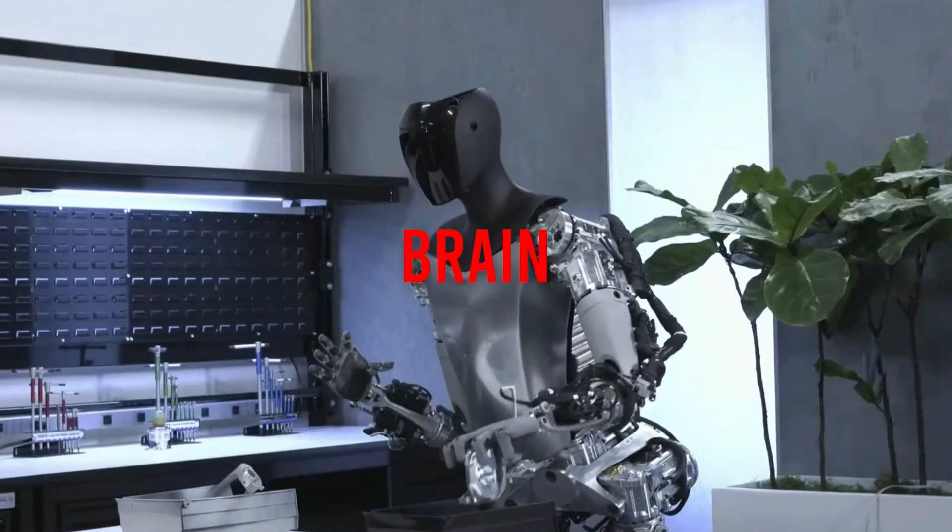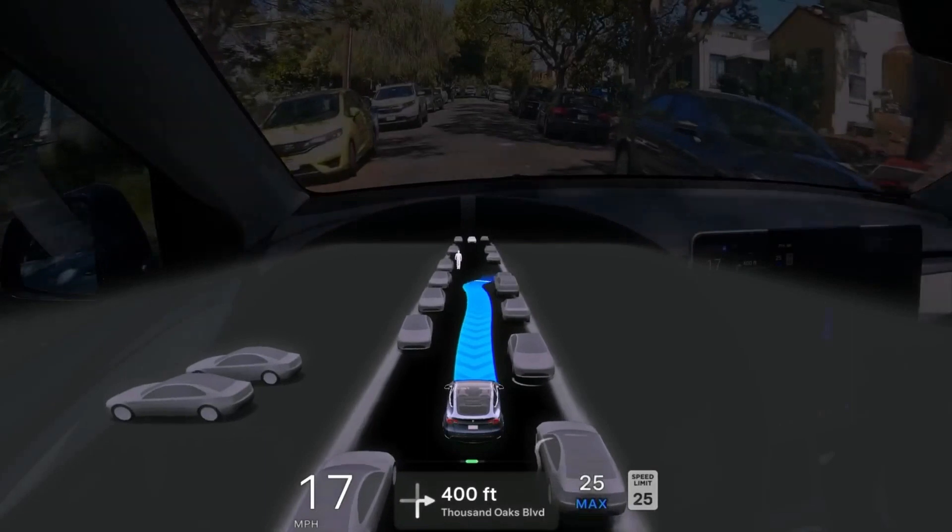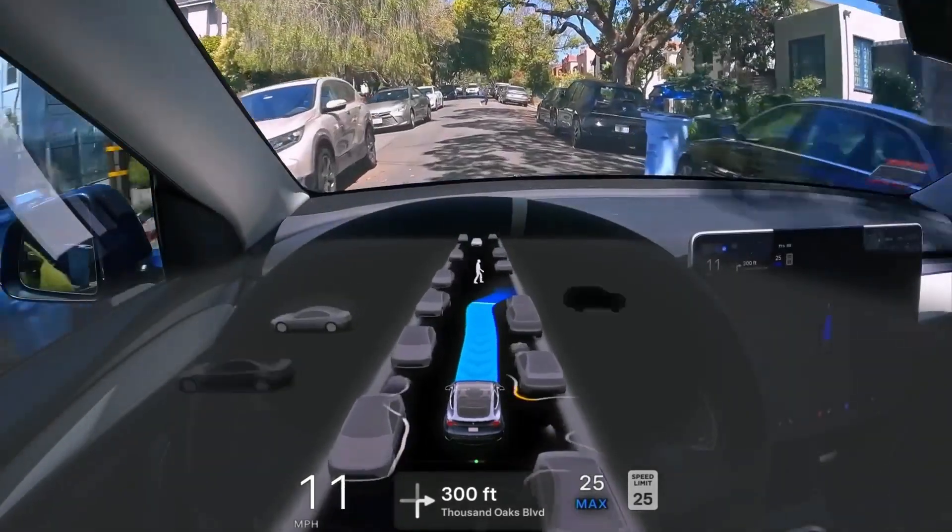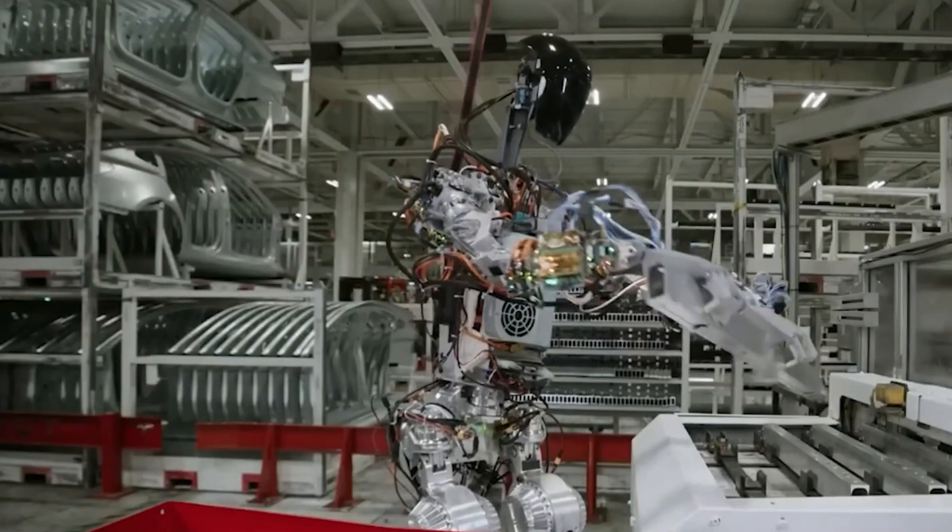Brain: Optimus is controlled by the same AI system that Tesla is developing for the advanced driver assistance systems using in cars. The AI system uses neural networks to process data from cameras and sensors and make decisions based on the task and the environment.